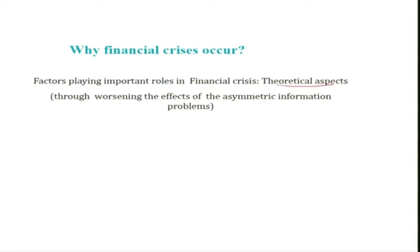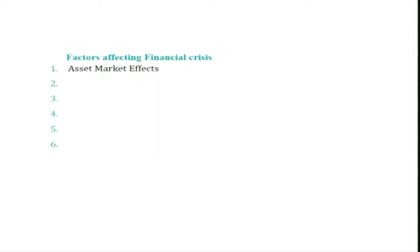Our focus will be on how these factors worsen the effects of the asymmetric information problem in the financial market, and how that can lead to the collapse of the market — that is, financial crisis. There are several factors; we will list them out one by one. We will be discussing six factors in total, and the first one is asset market effects.